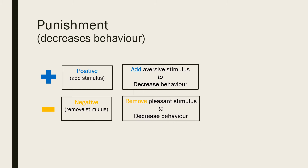Negative punishment occurs when a favourable event or outcome is removed after a behaviour occurs. Taking away a child's video game following misbehaviour is an example of negative punishment. Ultimately, in both cases of punishment, the behaviour decreases.